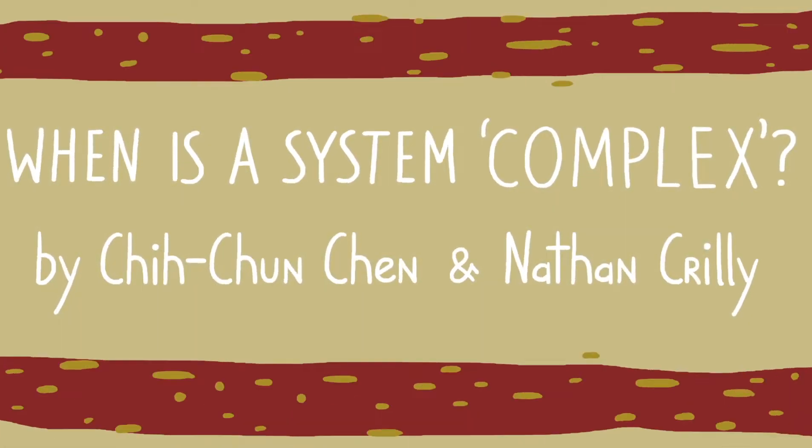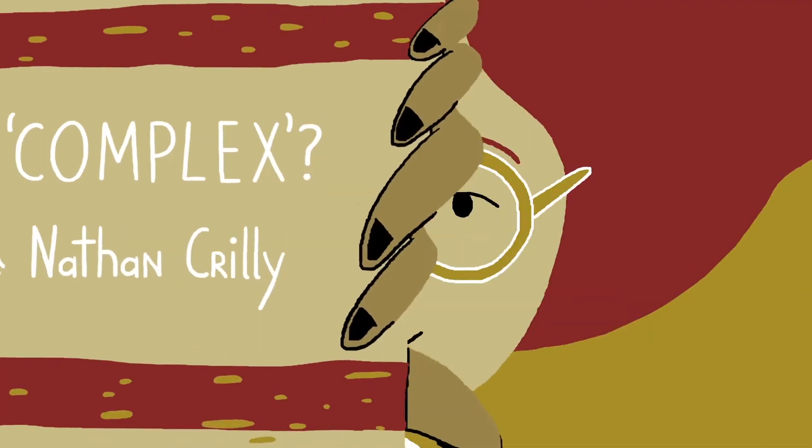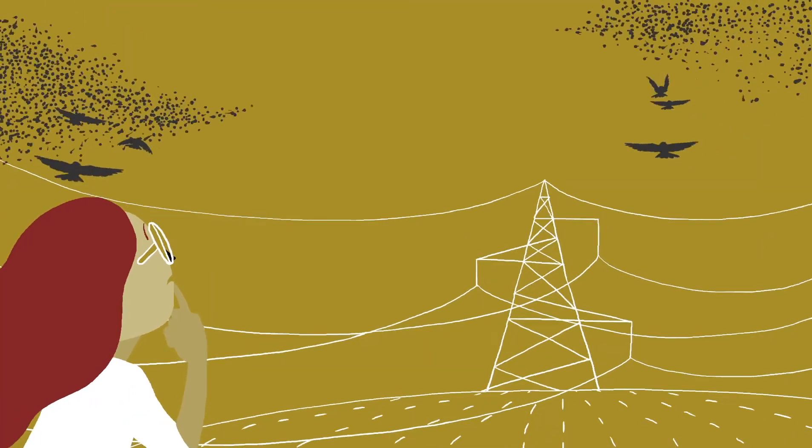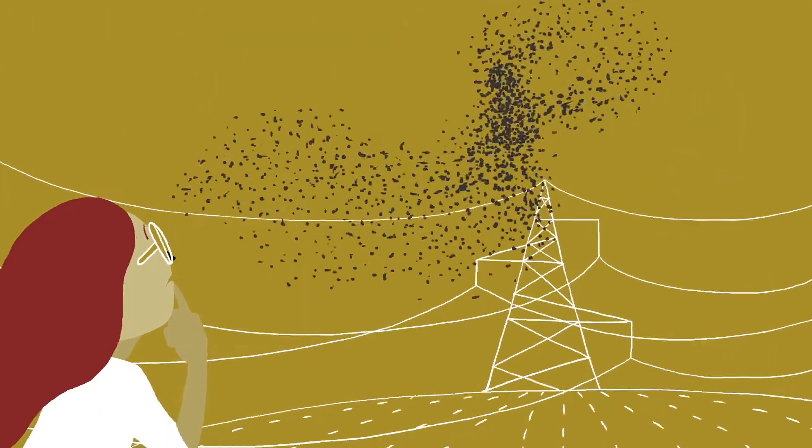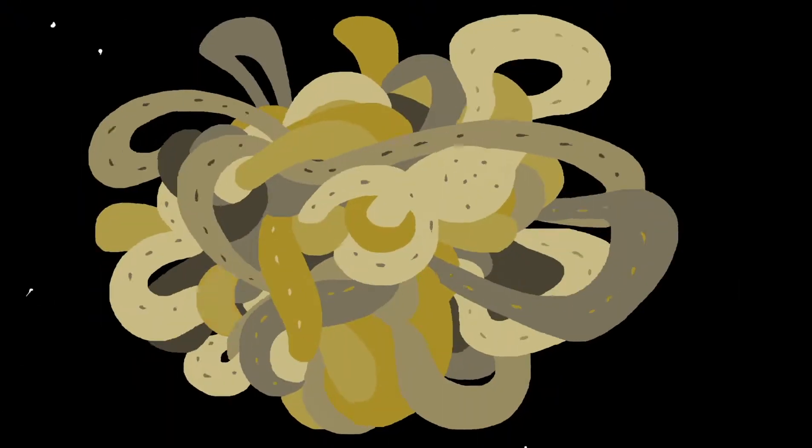When is a system complex? When we talk about things we don't fully understand or can't predict, we often refer to those things as being complex.